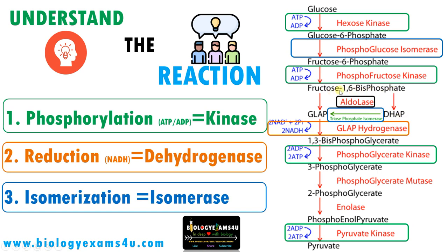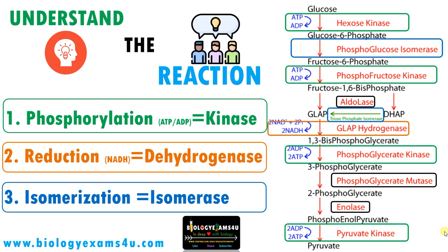Fructose 1,6-bisphosphate splits to form two 3-carbon compounds: dihydroxyacetone phosphate and glyceraldehyde 3-phosphate. An aldehyde is formed, therefore the enzyme is aldolase. Then, 3-phosphoglycerate becomes 2-phosphoglycerate — just changing the position of the phosphate group — therefore the enzyme is mutase: phosphoglycerate mutase. Finally, 2-phosphoglycerate becomes phosphoenolpyruvate; an enol is formed, therefore the enzyme is enolase.